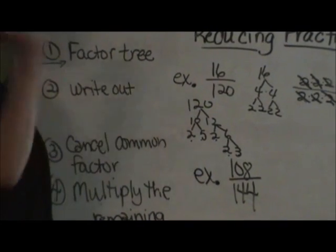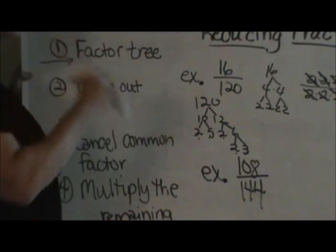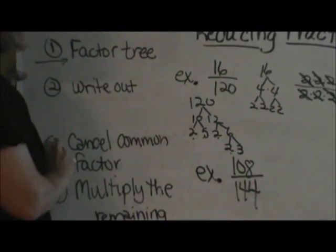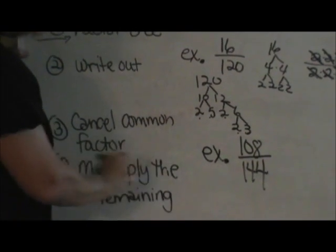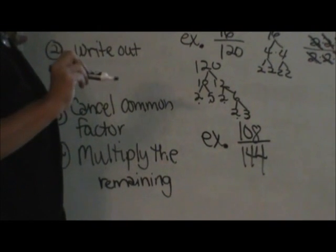Then you get to do the fun part. You get to cancel out. Anything that is common to the top gets canceled with anything common to the bottom. This is my favorite part. Get cancel happy. Then you're just going to multiply the remaining factors together.